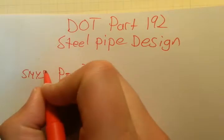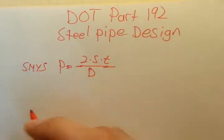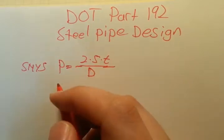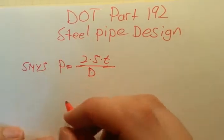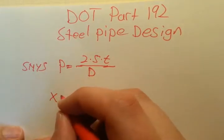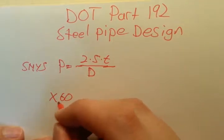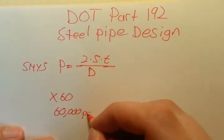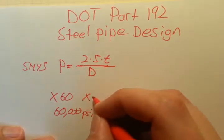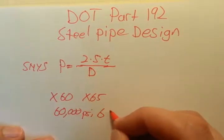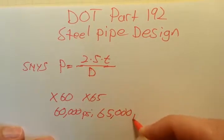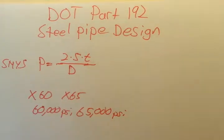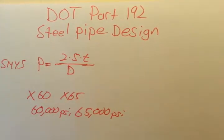I'll run through these really quick. S, the yield strength, is typically denoted in the industry as X and then a number. So X60 would be 60,000 PSI, X65 would be 65,000 PSI, and so on. You can actually get custom yield strengths made; they don't have to be in multiples of 10 or 5.